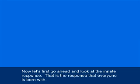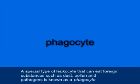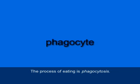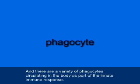Let's look at the innate response — the response that everyone is born with. A special type of leukocyte that can eat foreign substances such as dust, pollen, and pathogens is known as a phagocyte. The process of eating is phagocytosis, and there are a variety of phagocytes circulating in the body as part of the innate immune response.